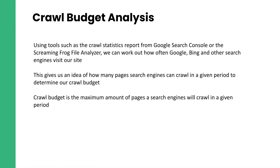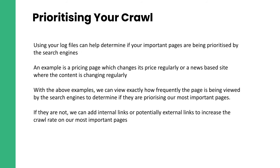Crawl budget analysis — you can use crawl stats from GSC or the log file analyzer to work out how often the search engines are visiting your website. This gives us an idea of how many pages the search engine's maximum crawl budget covers for a given period. You can prioritize your crawl — for example, there may be a pricing page that changes frequently or a news page that updates regularly. We can see how frequently these pages are being viewed by search engines and use our SEO tools to prioritize them, adding internal or external links to increase crawl frequency for specific pages.